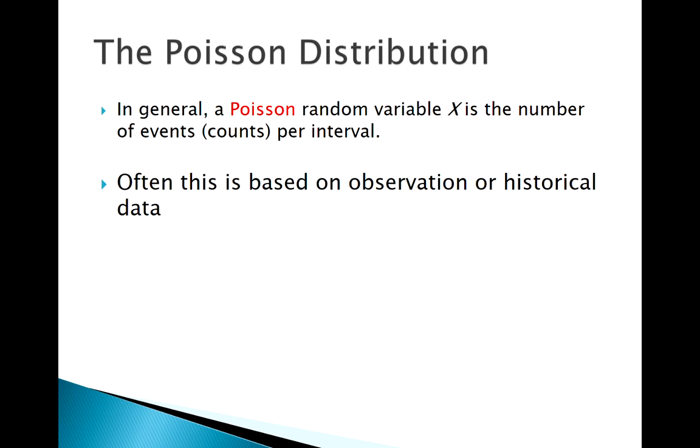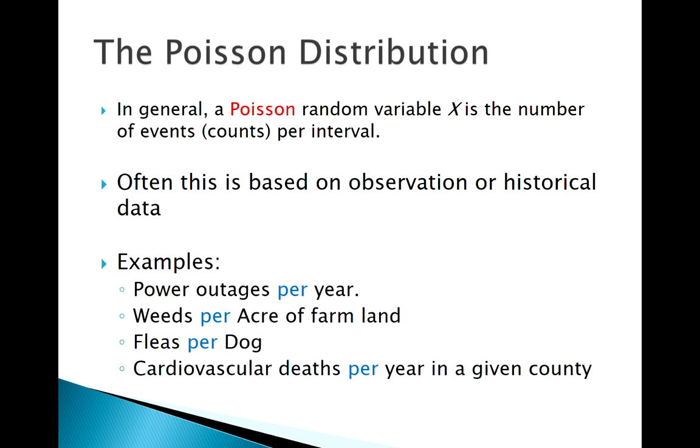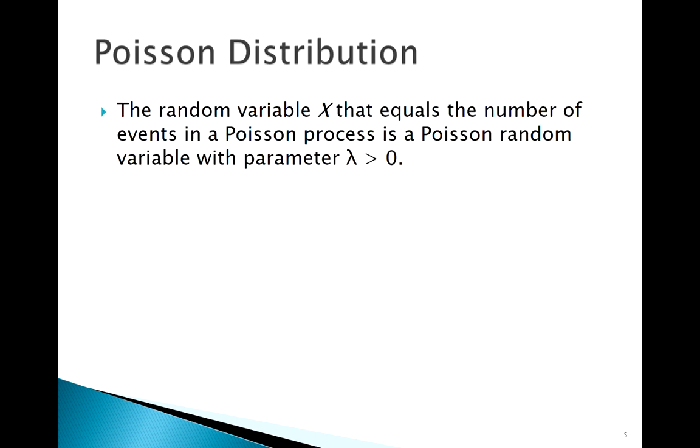We're looking at the number of events that occur on a fixed interval. Here are some examples: events per interval of time, number of events per acre of farmland (that's an area or distance), fleas per dog. We're looking at items or events per a fixed interval—that's what our Poisson counts.